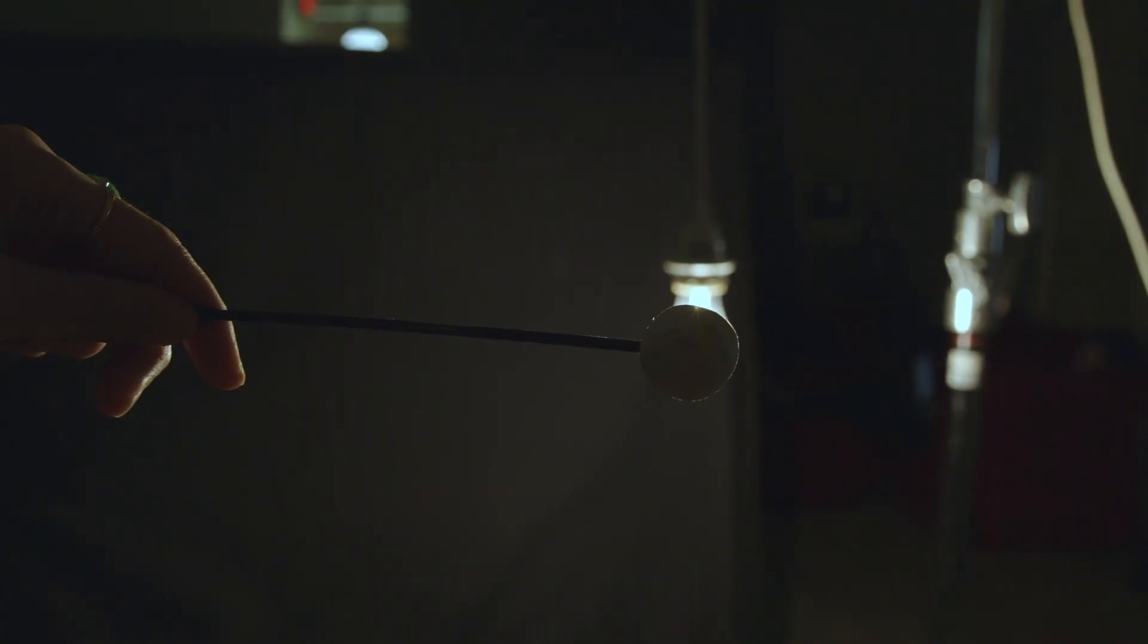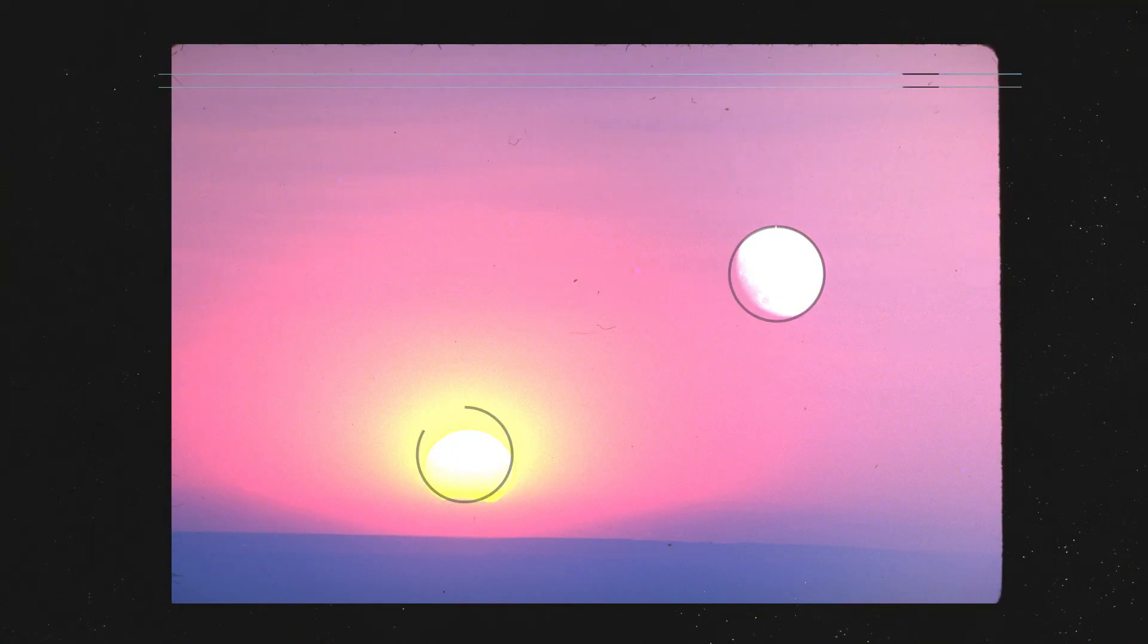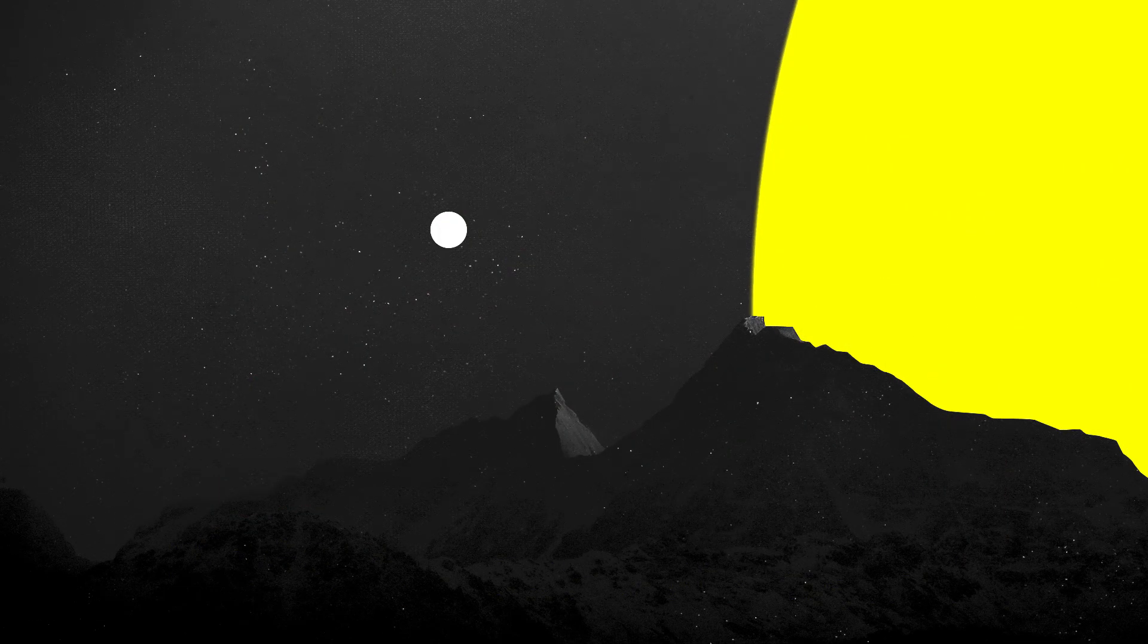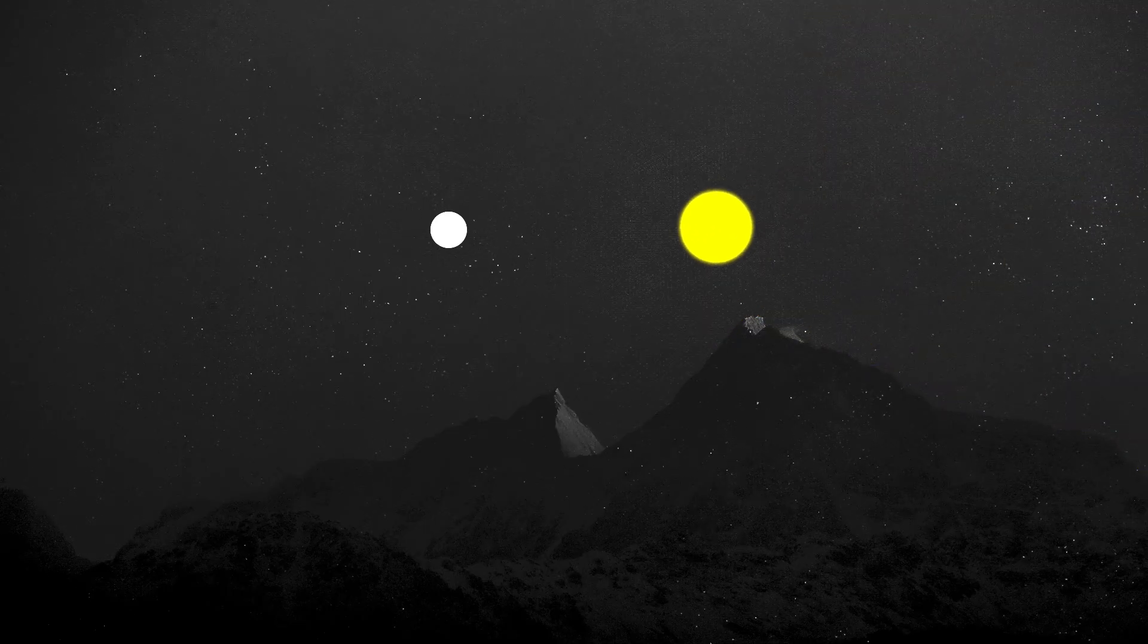In a total solar eclipse, the moon precisely covers the sun from the vantage point of someplace on Earth. This is possible because by coincidence, the sun and the moon appear to be about the same size in our sky. While the sun is 400 times bigger than the moon, it's also about 400 times farther away.